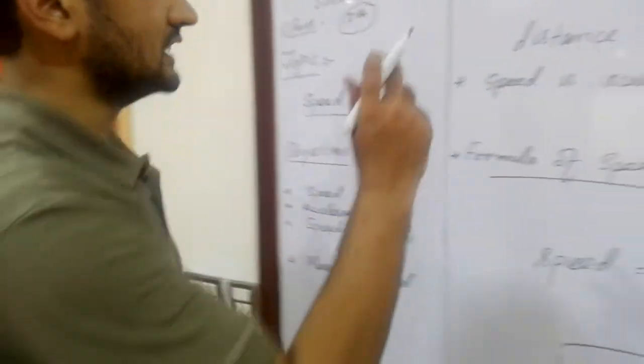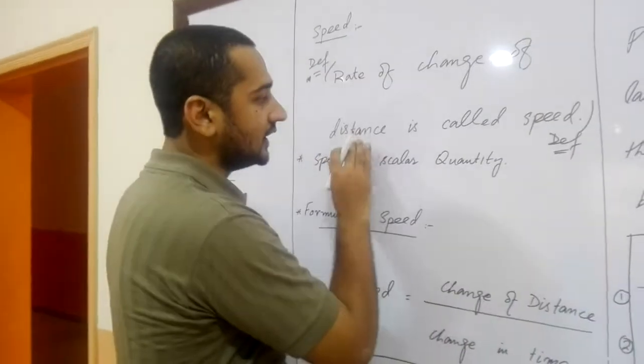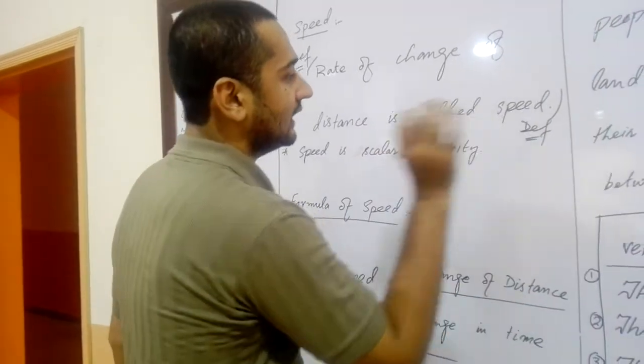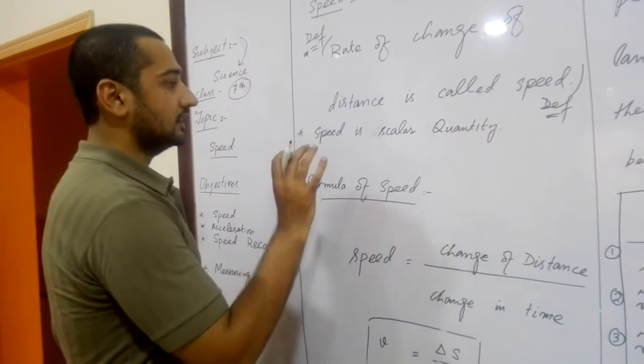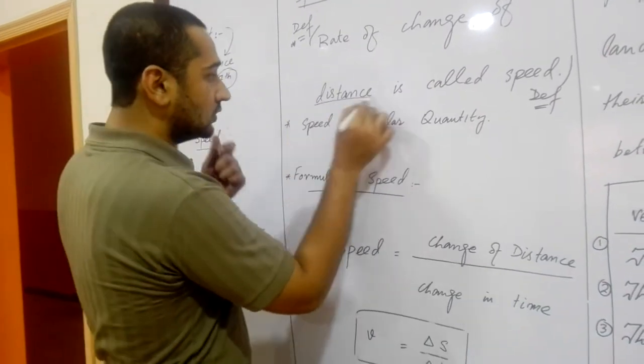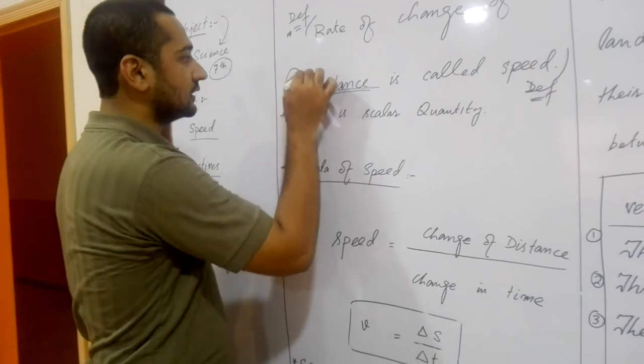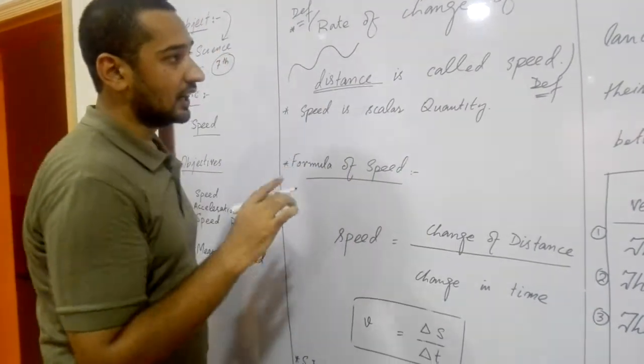First of all I am going to discuss speed. Basically the speed is rate of change of distance, is called the speed. And it is a scalar quantity. Distance is a scalar quantity because distance is having different direction at different places.